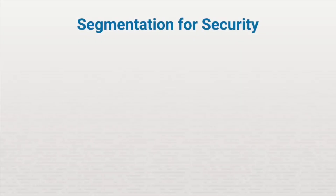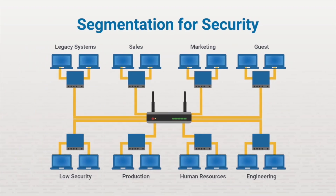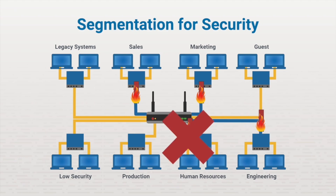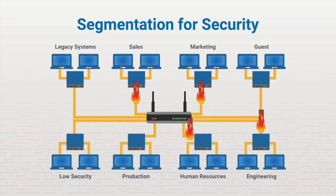You can also use network segmentation to isolate high-security areas of your network. For example, you could place more secure computers — such as the human resource computers and the engineering computers — on their own segment, and place legacy and lower-security devices on their own segments as well, configuring each department on their own subnet. Firewalls with their access control lists can then be used to restrict traffic between them. For example, you could block sales, marketing, and HR departments from accessing engineering data, or block sales, marketing, and engineering from accessing sensitive HR data. You'll frequently see this done to reconfigure a network so that it complies with governmental security mandates.